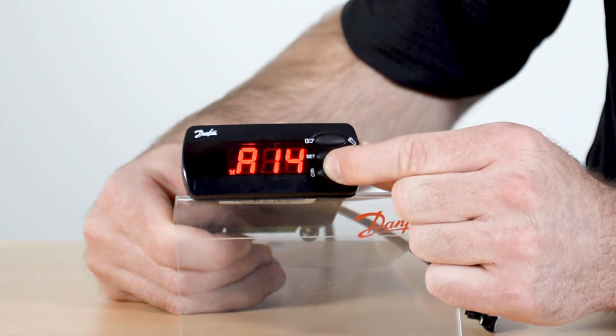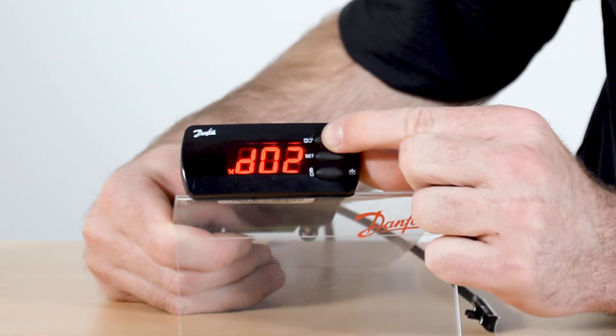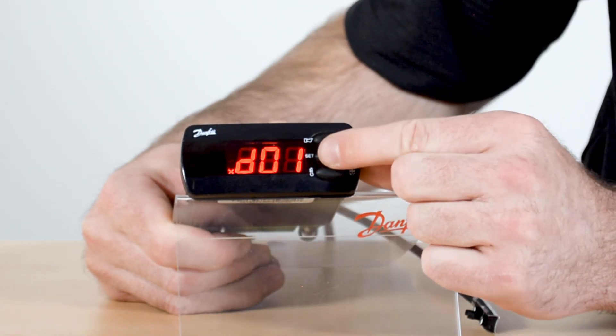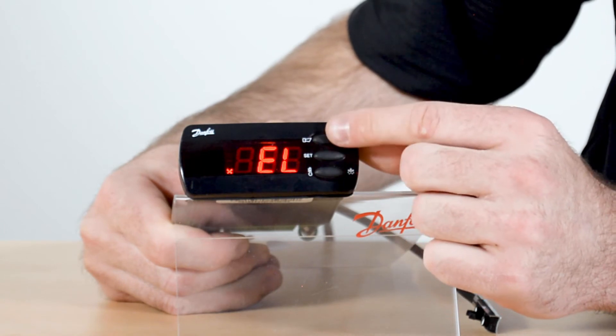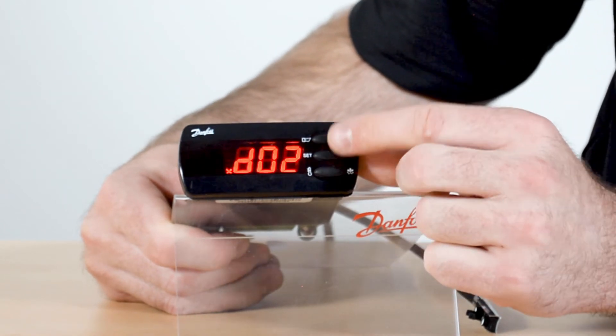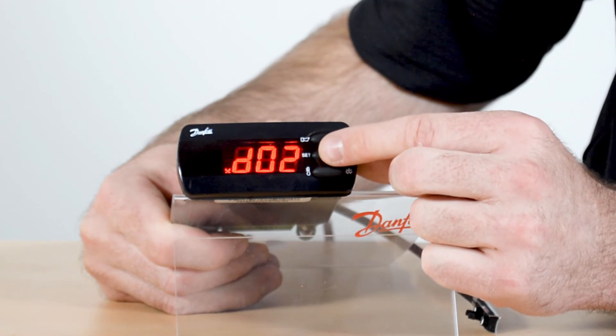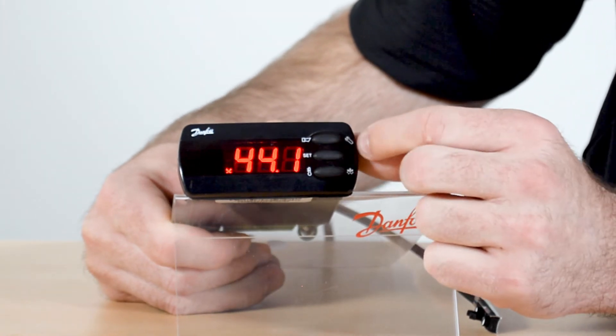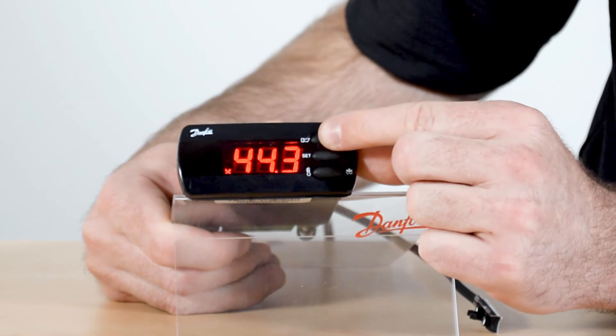The other parameters that we can go to are the defrost parameters, so we get down to the D parameters. D01 is the defrost method which we set for two or electric even if we're going to do a time off defrost. D02 is the parameter for our defrost stop temperature or the defrost termination temp.